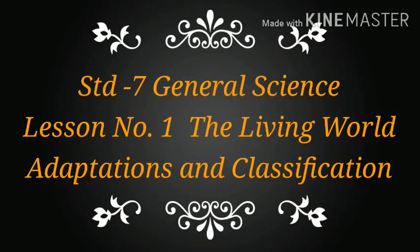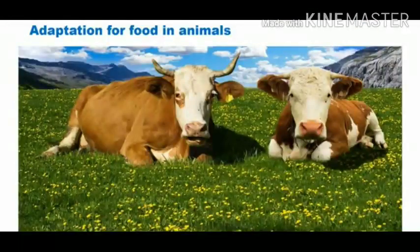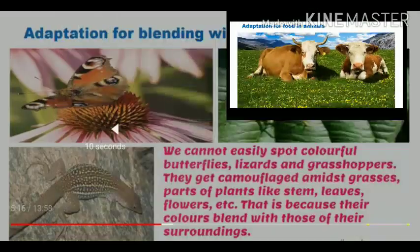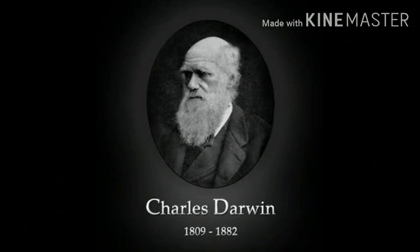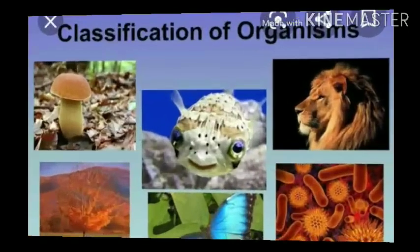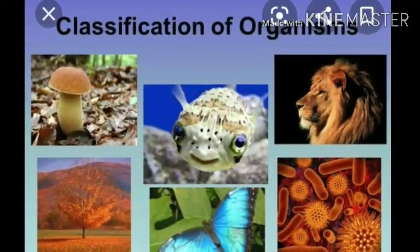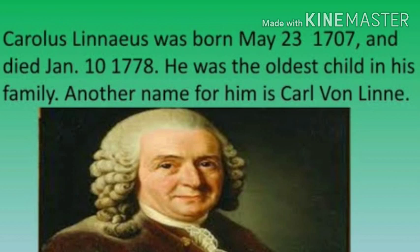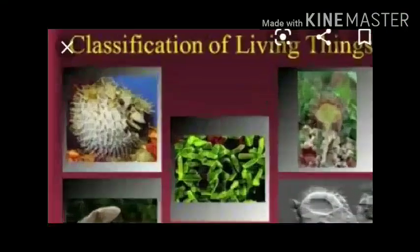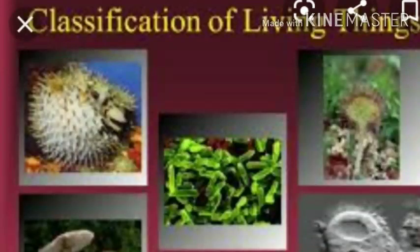Hello students. In the last video we learned about adaptation for food in animals, adaptation for blending with the surroundings, and Darwin's theory of evolution. Today we will learn about classification of living organisms and binomial nomenclature by Carl Linnaeus. So let's start with the classification of living organisms.